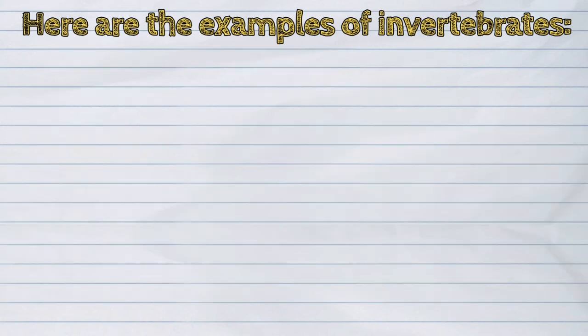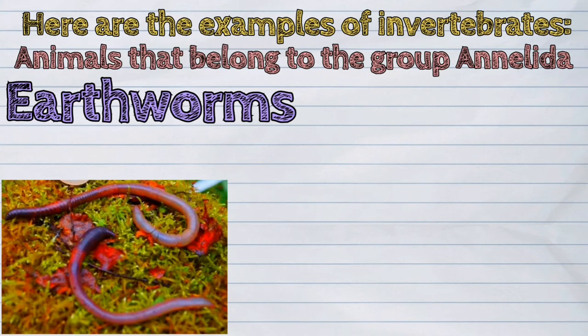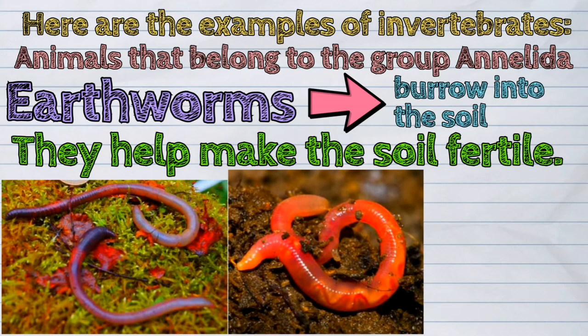Now, let's discuss the fifth example of invertebrates — the animals that belong to the group Annelida. An example of this are the earthworms that burrow into the soil and help make it fertile.